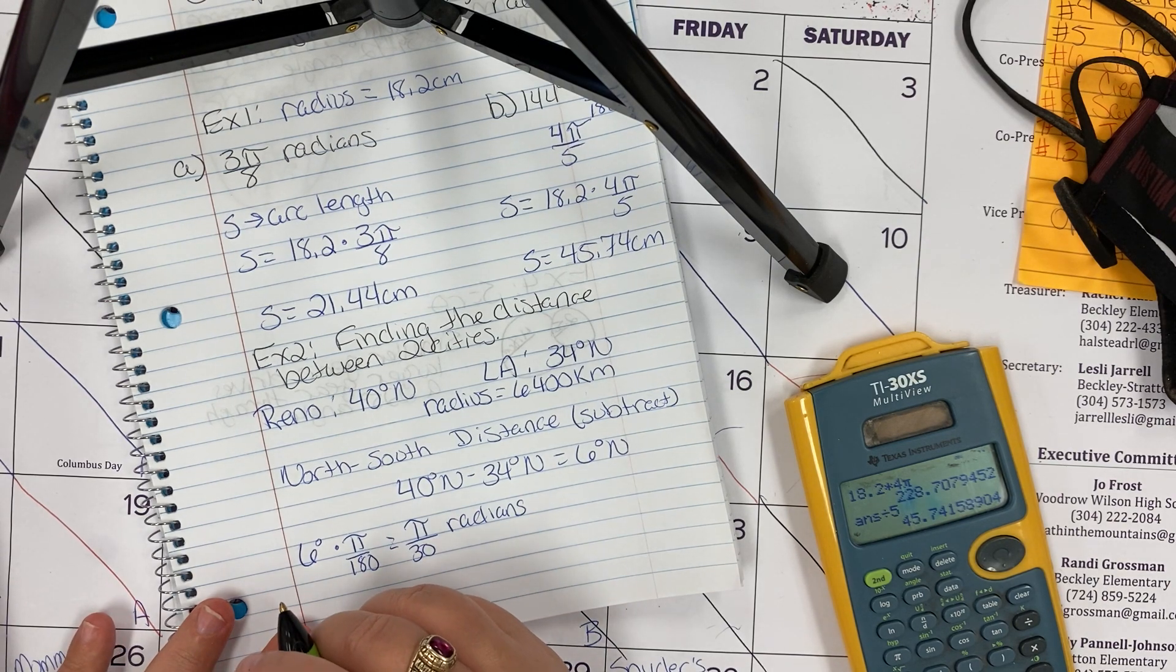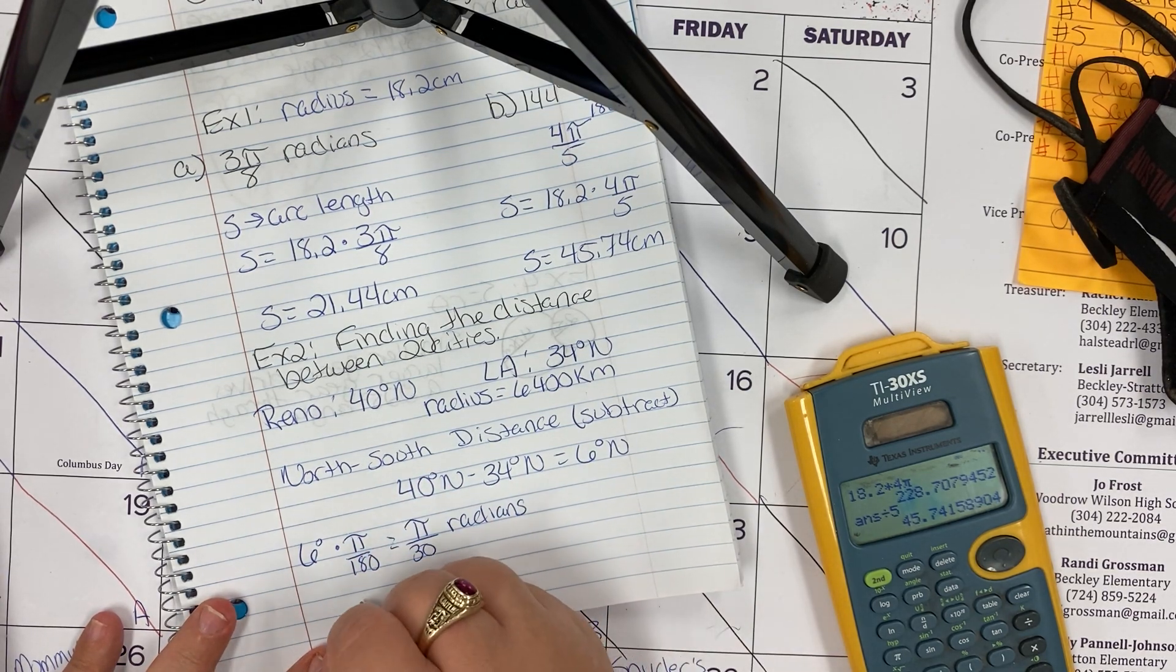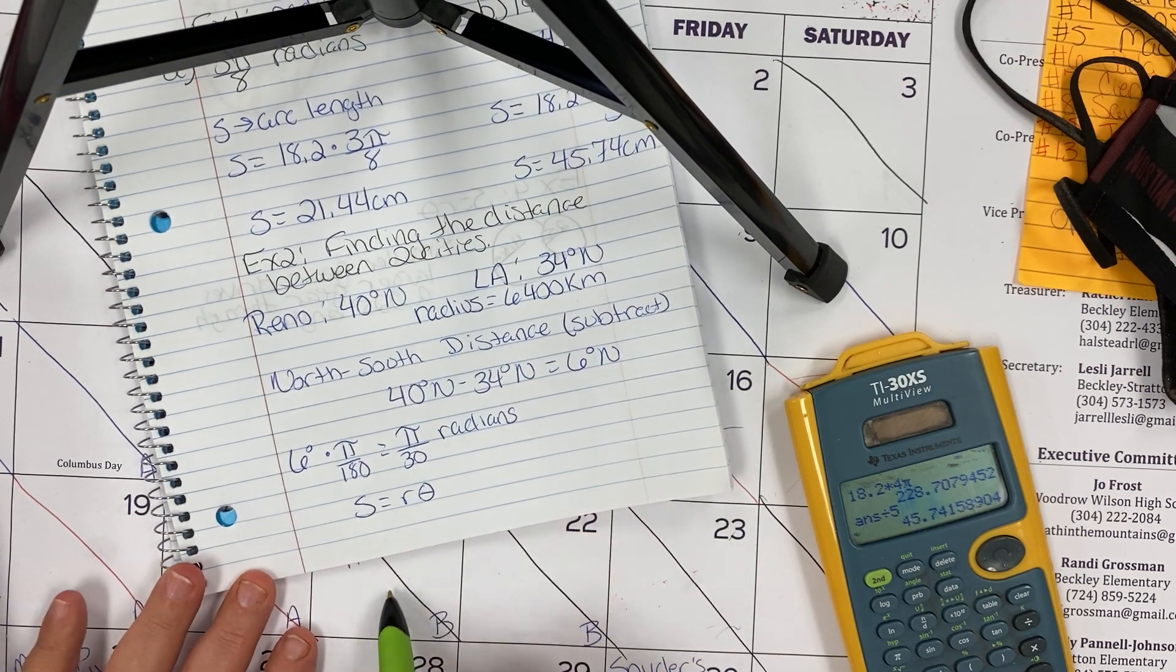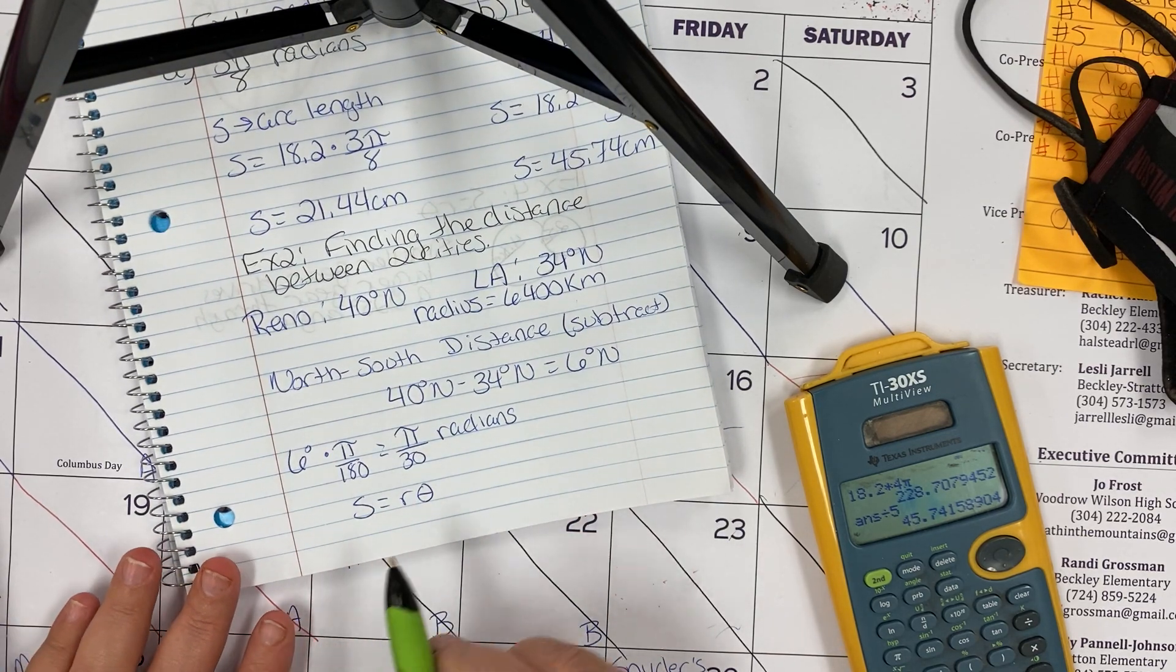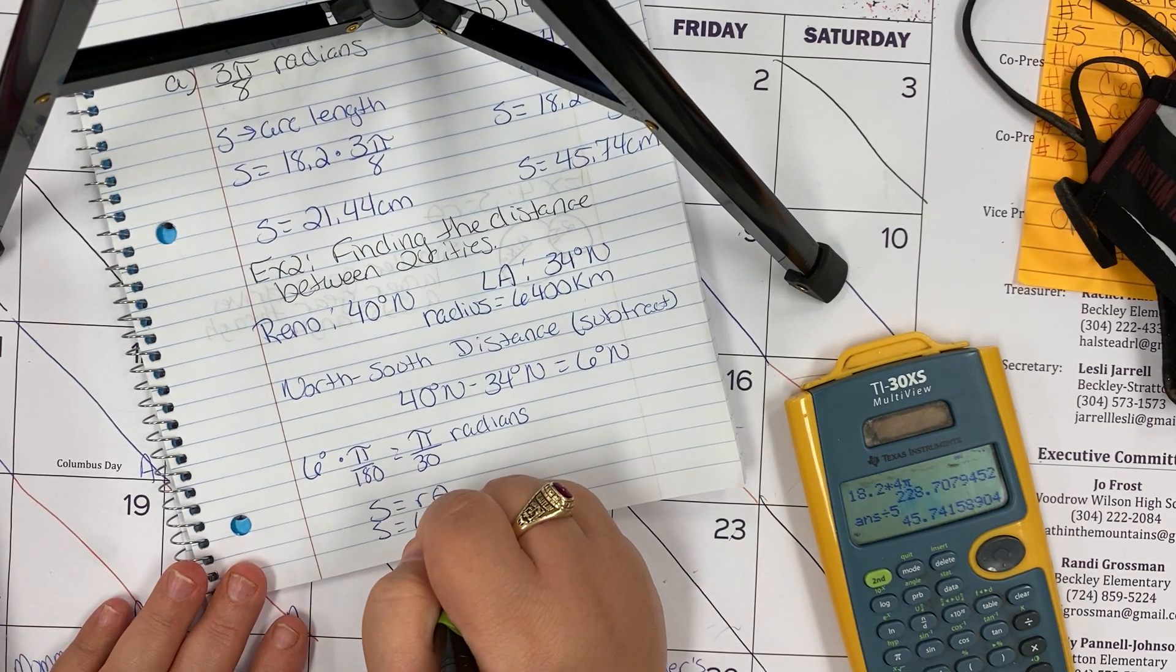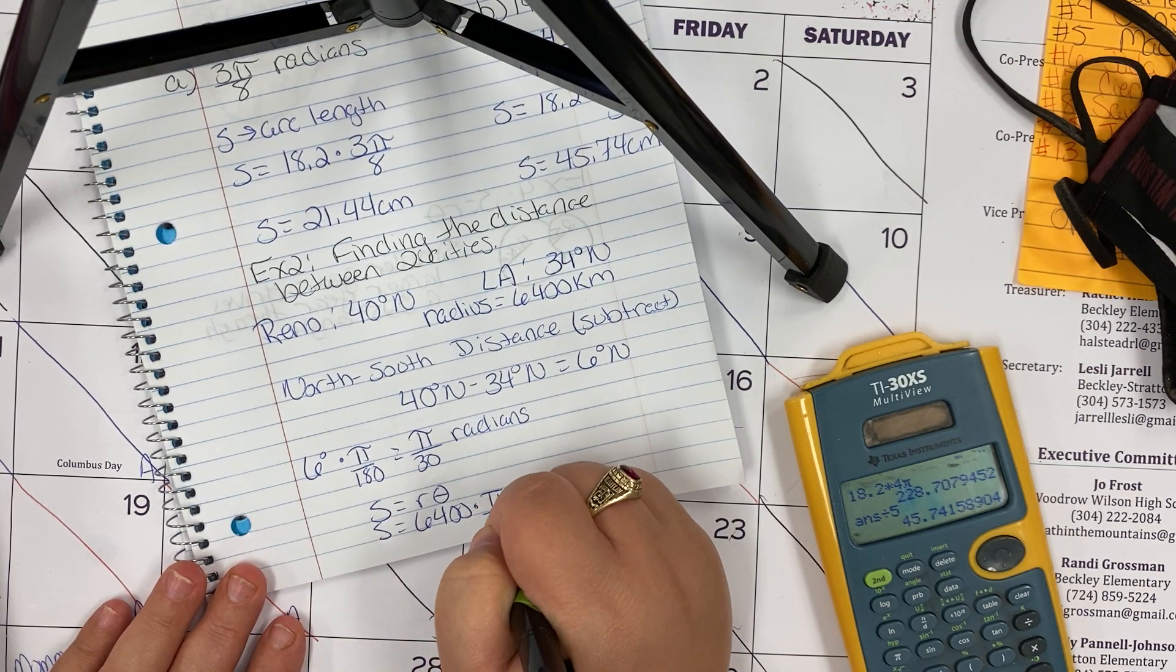In order to find, because of the curvature of the earth, I need to use the arc length formula to find the actual distance. So s is going to equal the radius, which is 6400, times π over 30.